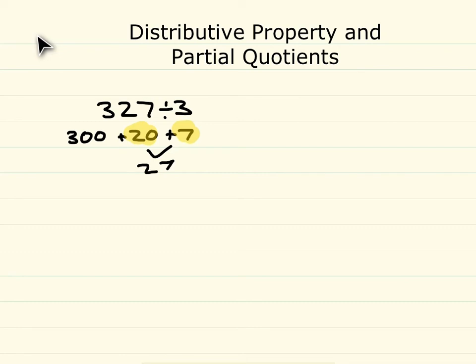So we're going to kind of partially use expanded form for this problem. So we're going to have 300 plus 27 instead of 300 plus 20 plus 7. So let's take this part now and let's break this up and divide each part by 3.